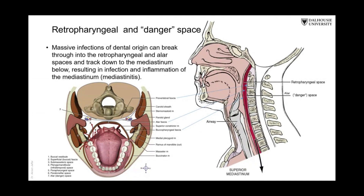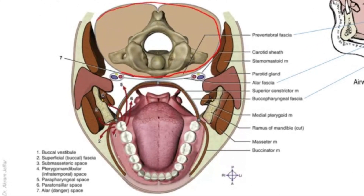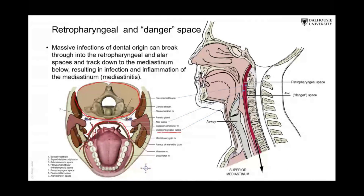If you look at this slide, you will find that the retropharyngeal space is located between fasciae. Looking at the cross-section: there is the pre-vertebral fascia that surrounds the pre-vertebral muscles and the vertebral block of the neck, and then there is another fascia that covers the pharynx called the buccopharyngeal fascia. Between them is the retropharyngeal space.